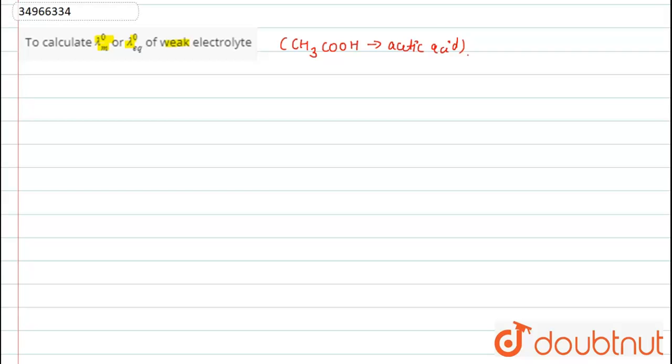So the formula to calculate molar conductance of weak electrolyte at infinite dilution is equal to molar conductance of different ions, that is CH3COO- plus molar conductance at infinite dilution of H+.